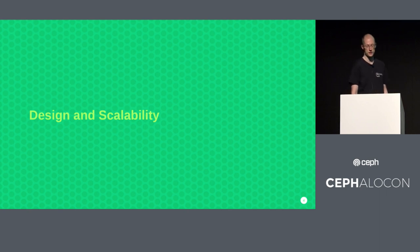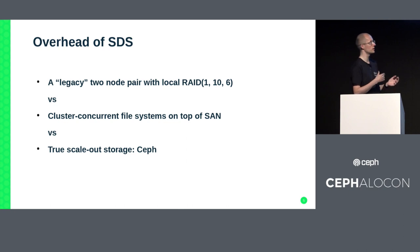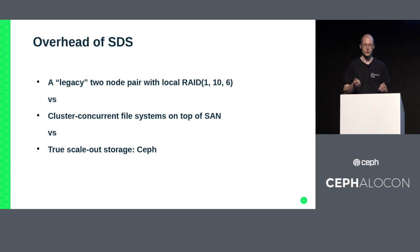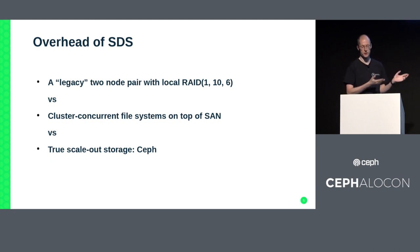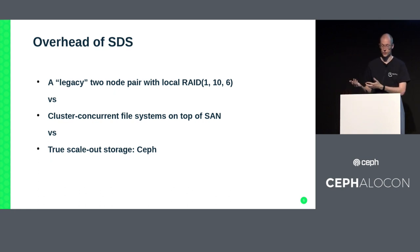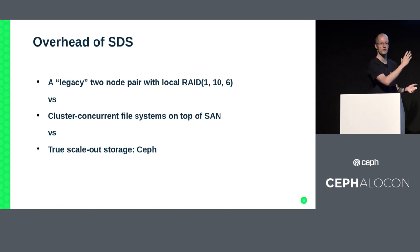Sage hinted at this in his keynote this morning. Ceph has been designed with a few things in mind. Before we look at that, look at what was there before software-defined storage: HA clusters with two nodes and replicated storage, network-attached storage exporting storage to a bunch of other nodes, or a cluster concurrent file system on top of a storage area network - which is nothing else but a very expensive network-attached storage device with fiber channel interfaces. And then ultimately true scale-out storage, though sometimes it feels like we have forgotten that all these other approaches also exist.